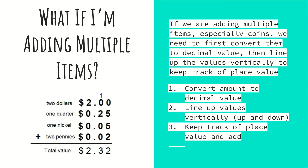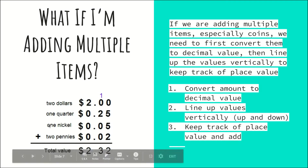What if we're adding multiple items? None of us really go to the grocery store and only buy one thing. If we're adding multiple items, especially coins, we need to first convert them to decimal value, then line up the values vertically to keep track of place value. Step one: convert to decimal value. Step two: line up values vertically. Step three: keep track of place value, then add. For example: one item is two dollars, one is a quarter, one is a nickel, and one is two pennies.